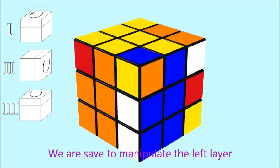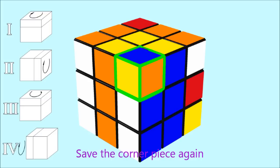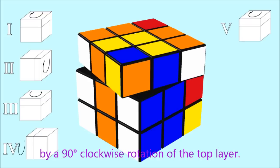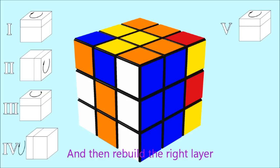We are safe to manipulate the left layer by rotating it 90 degrees counterclockwise. Save the corner piece again by a 90 degrees clockwise rotation of the top layer.